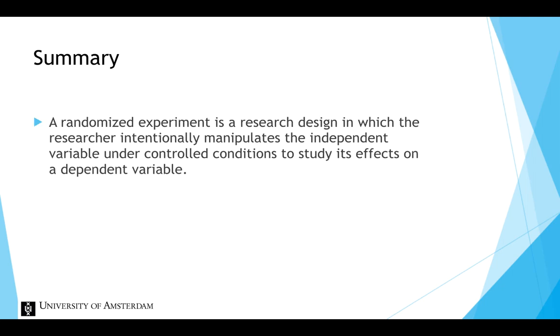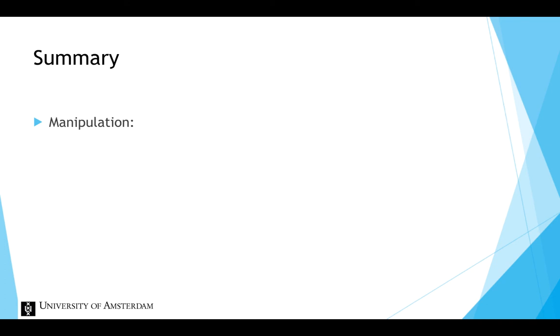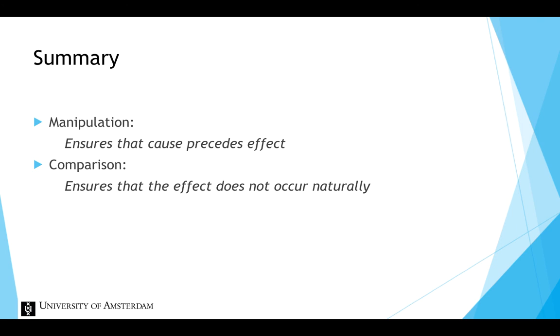To summarize, a randomized experiment is a research design in which the researcher intentionally manipulates an independent variable under controlled conditions to study its effects on a dependent variable. Manipulation ensures that the cause precedes the effect. Comparison to a control group ensures that the effect does not occur naturally. And random assignment ensures that there are no alternative explanations for the effect, thus maximizing internal validity.